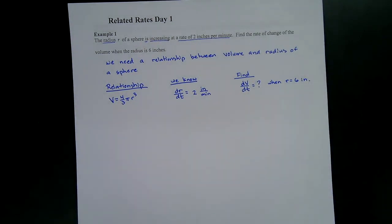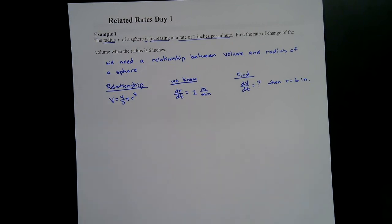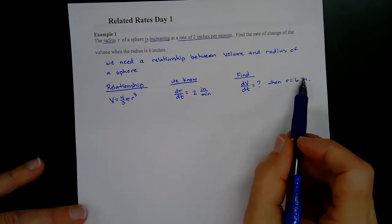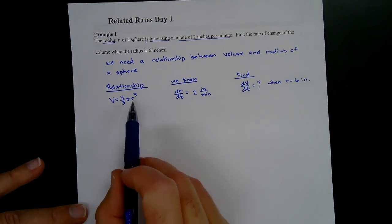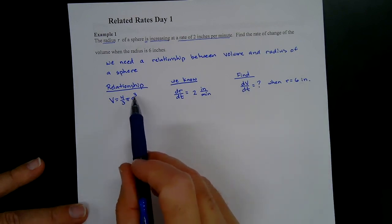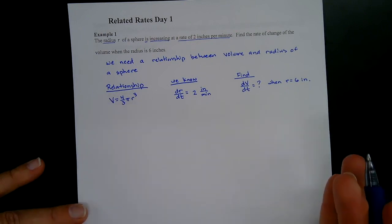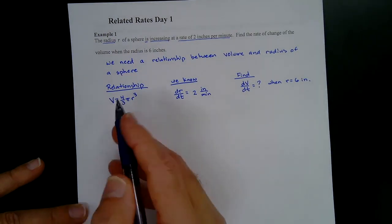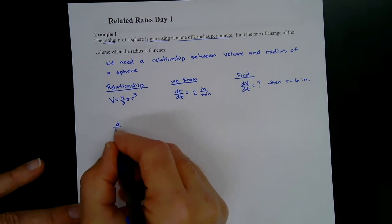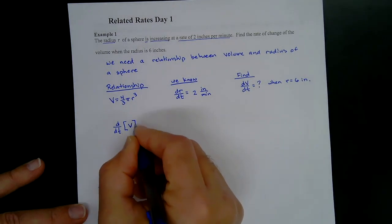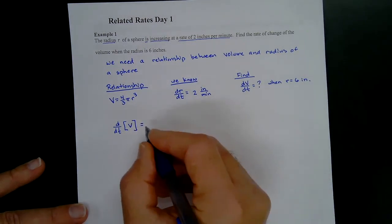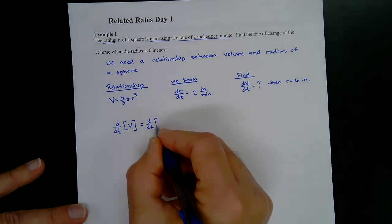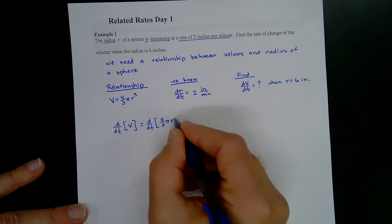It may not be increasing at the same rate at every moment — the rate depends on the radius. We cannot put six inches in right now because we haven't taken the derivative yet. We want to take the derivative with respect to time of both sides: d/dt of V equals d/dt of (four-thirds pi r cubed).